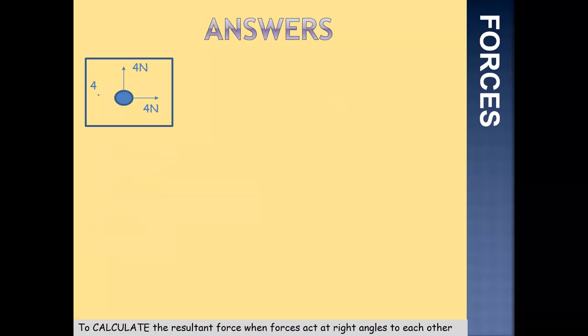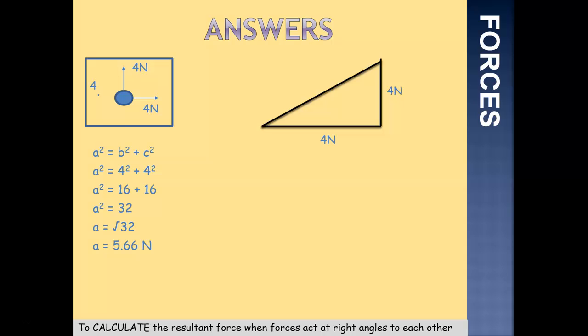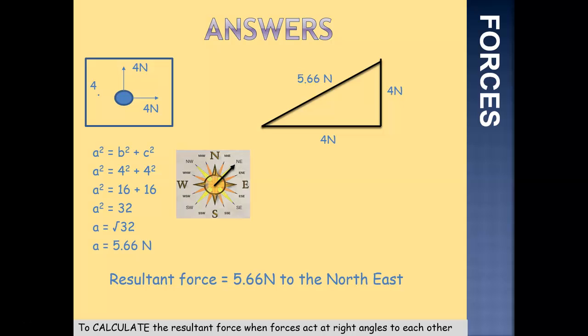Question 4: 4 newtons acting to the north and 4 newtons acting to the east. We draw our triangle showing 4 newtons to the north and 4 newtons to the east, with our hypotenuse in the same direction as the resultant force. We place those values into Pythagoras' theorem: 4 squared plus 4 squared — that's 16 plus 16, giving us 32. A is the square root of 32, which is 5.66 newtons. Looking at our compass points, the force is acting to the north and to the east — a northeast direction. Our resultant force is 5.66 newtons to the northeast.